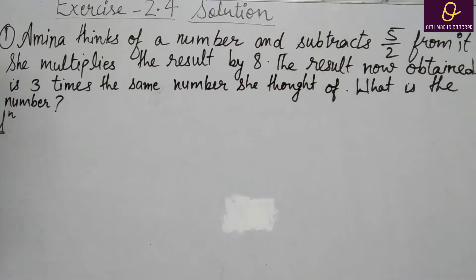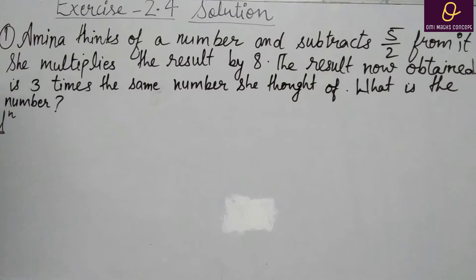Hello everyone, today we will discuss Exercise 2.4 solution. Our first question is: Amina thinks of a number and subtracts 5 by 2 from it. She multiplies the result by 8. The result now obtained is 3 times the same number she thought of. What is the number?